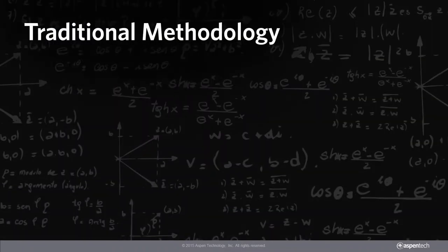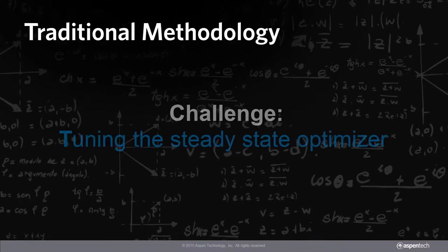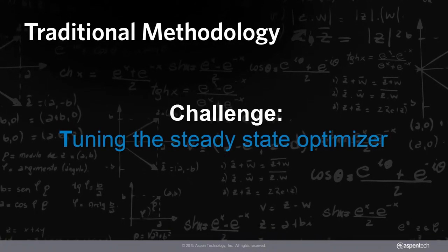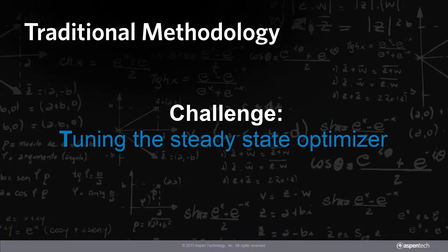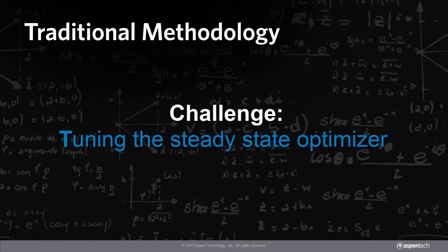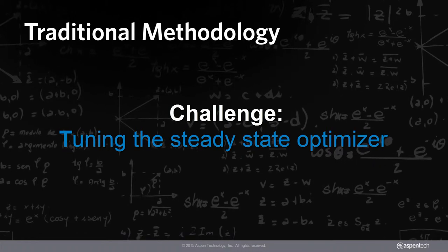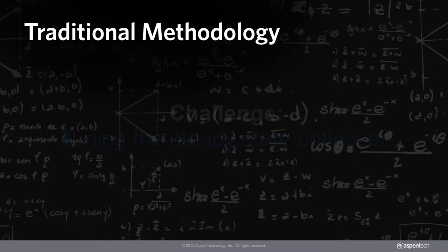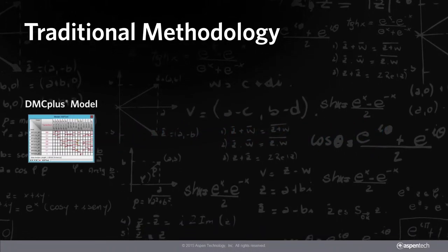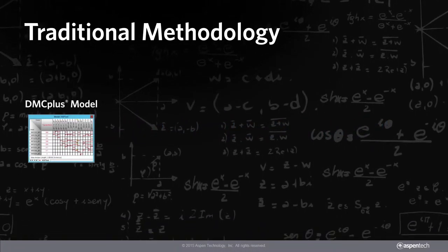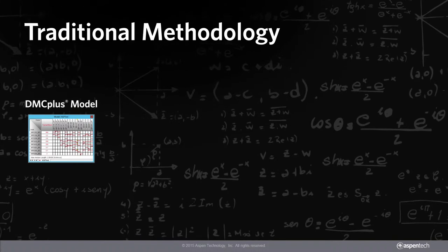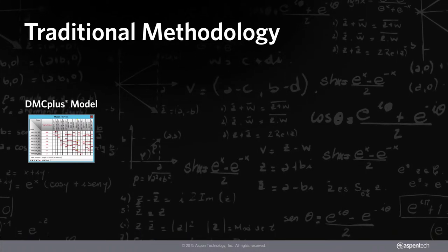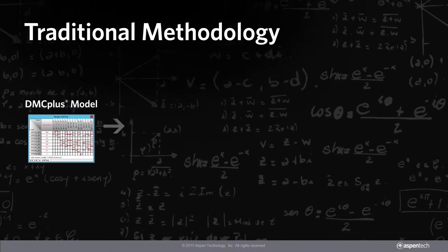In the past, one of the most challenging parts of building, deploying, and maintaining advanced process control controllers was tuning the steady state optimizer. The tuning process required a thorough understanding of the economic objectives of the process unit.